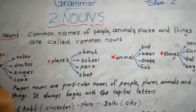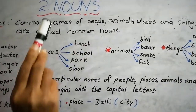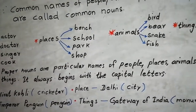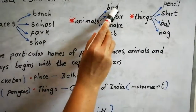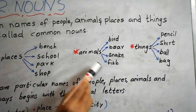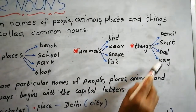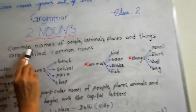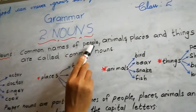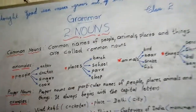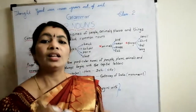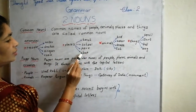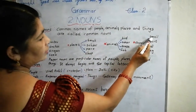See the places: beach, school, park, shop. These are examples for places. You can give more examples. And next, animals: bird, bear, snake, fish. These are examples for animals. Now things: pencil, shirt, ball, bag. Common nouns are names of people, animals, places and things, and common nouns begin with small letters. No capital letters — every letter is small.